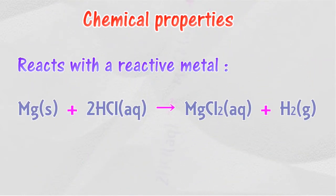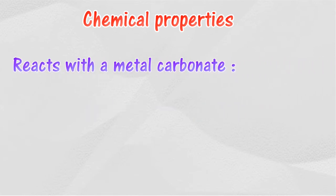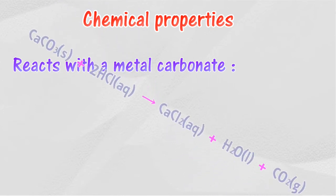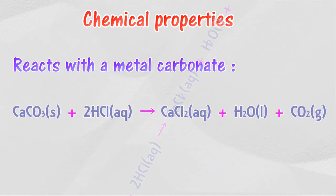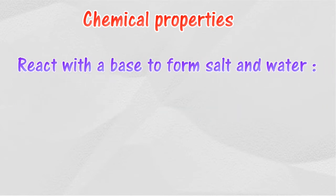An acid reacts with a reactive metal to release hydrogen gas. For example, hydrochloric acid reacts with magnesium to release hydrogen gas. An acid also reacts with a metal carbonate to release carbon dioxide. For example, hydrochloric acid reacts with calcium carbonate to release carbon dioxide gas.